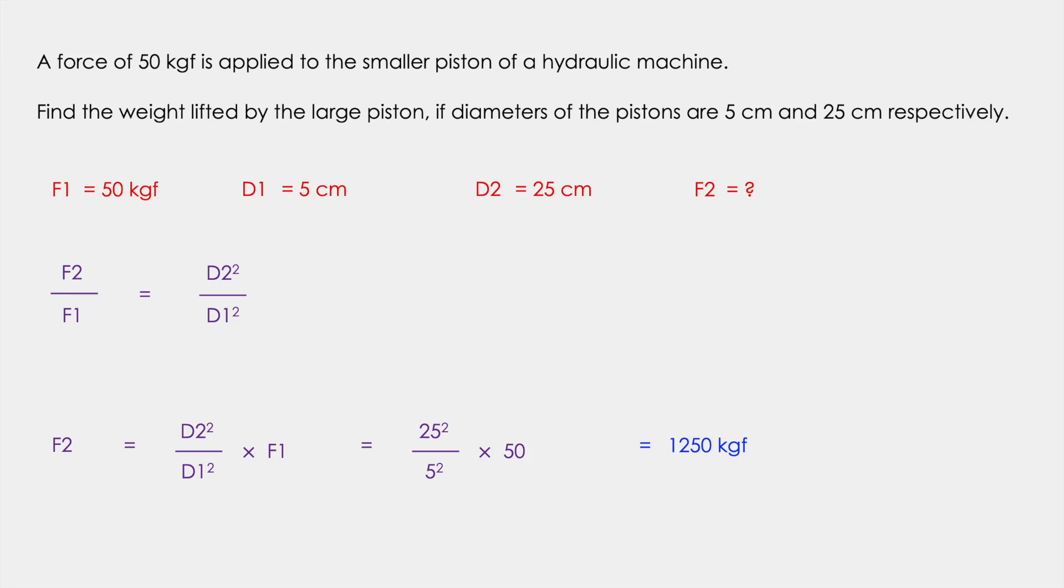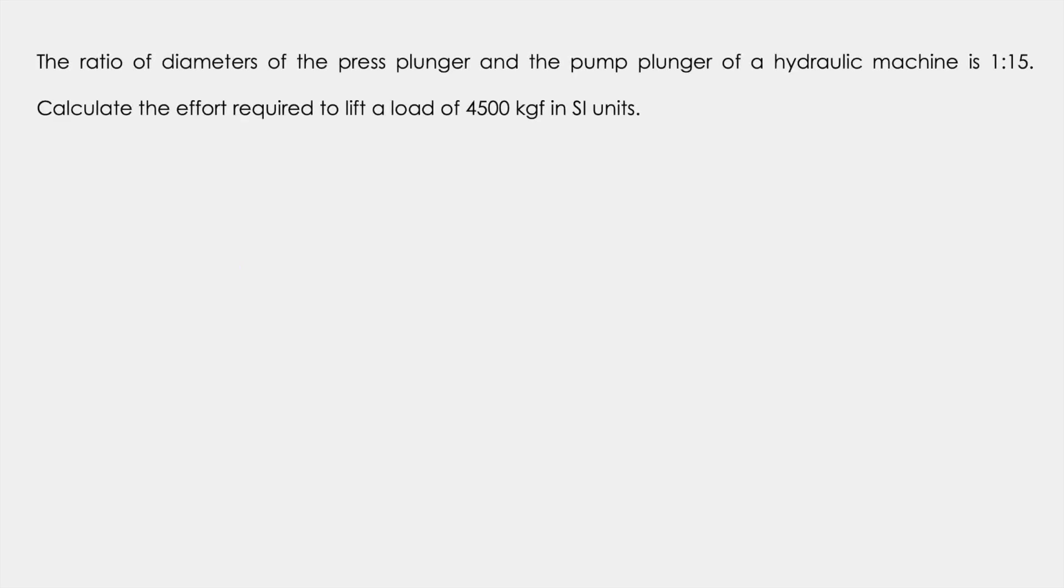And now let's look at just one more problem. The ratio of diameters of the press plunger and the pump plunger of a hydraulic machine is 1 to 15. Calculate the effort required to lift a load of 4500 kgf in SI units.